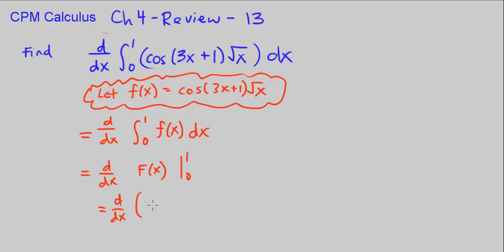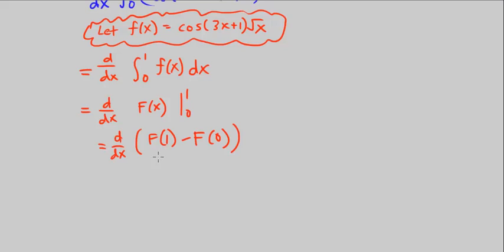So I can go ahead and rewrite this. This is just going to be F. I'm going to plug in 1, so F of 1 minus big F of 0. The thing to notice now is that these values are going to be constants. We're going to plug them in, and we're going to get an actual value out in the term of some number.